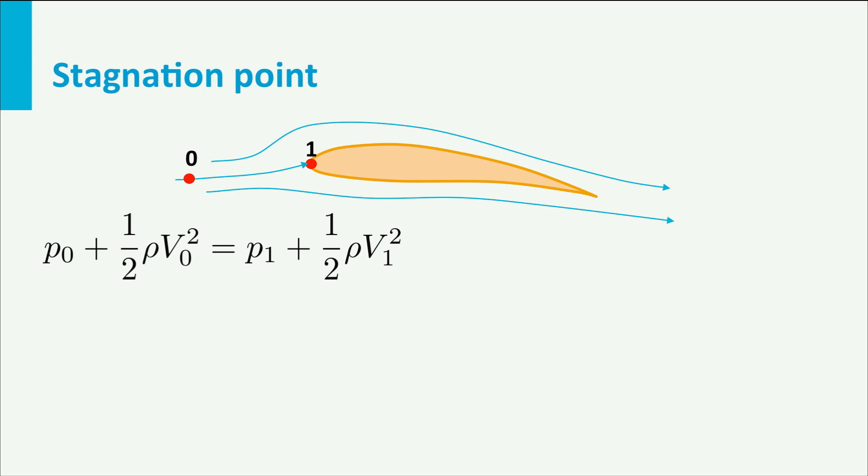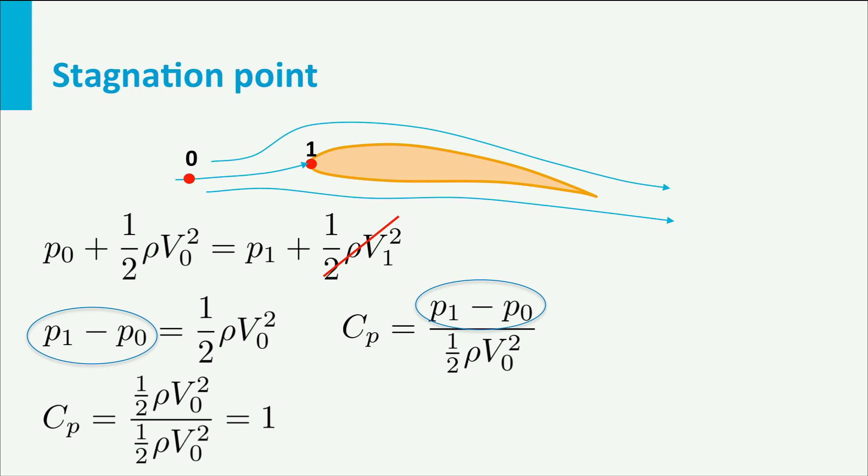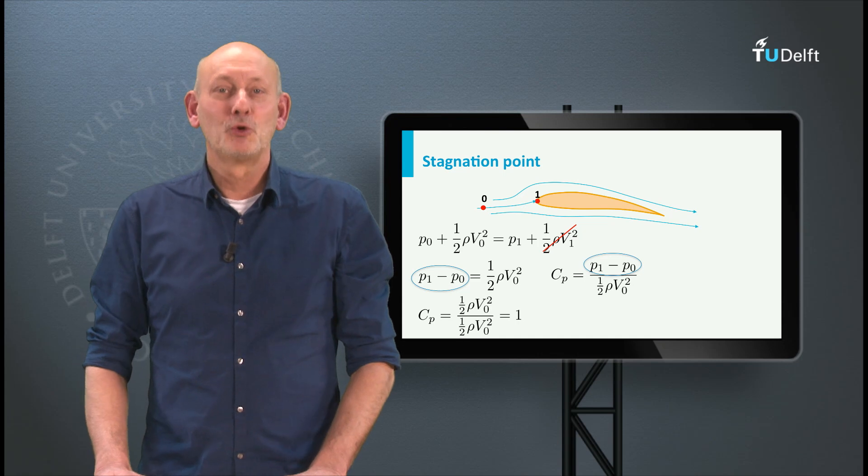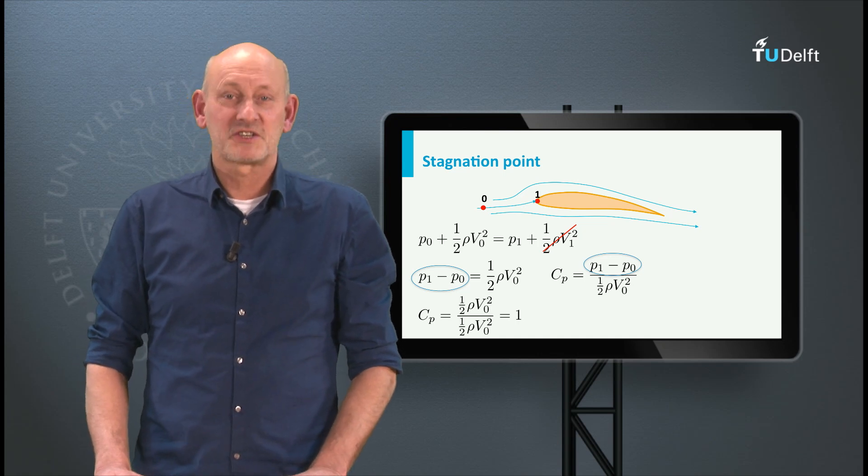Now if we write down Bernoulli's principle along this dividing streamline, then we see that because v1 is zero, we have p1 minus p0 is equal to a half rho v0 squared. If we fill this in the definition for the Cp, we finally find Cp is 1. This is true for those cases in which we may apply Bernoulli's law, so in incompressible flow.